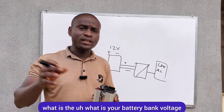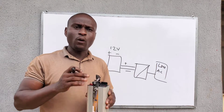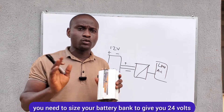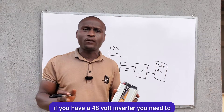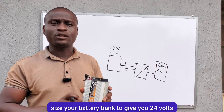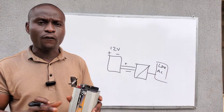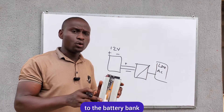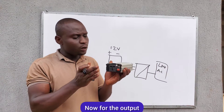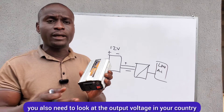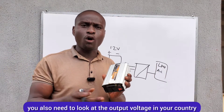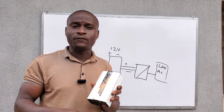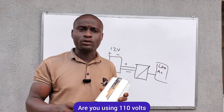You need to check your DC input voltage and match it to your battery bank voltage. If you have a 24-volt inverter, you need to size your battery bank to give you 24 volts. If you have a 48-volt inverter, you need to size your battery bank to give you 48 volts, so that you can connect your inverter to the battery bank. For the output, you also need to look at the output voltage in your country — whether you are using 220, 230, 240, or 110 volts.